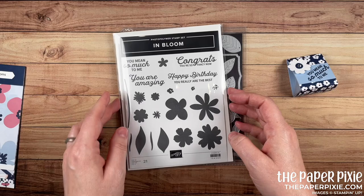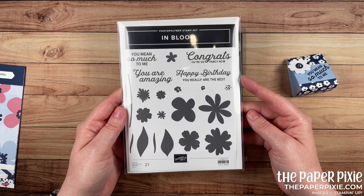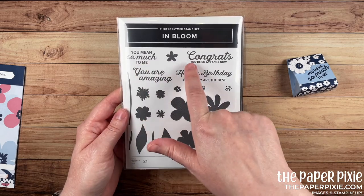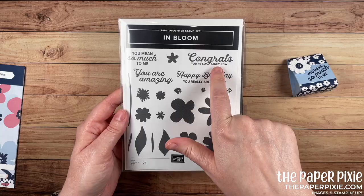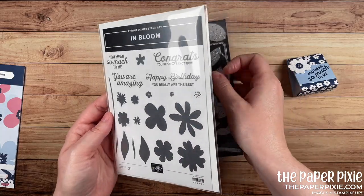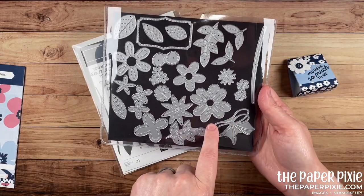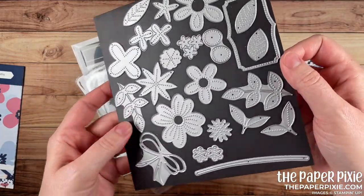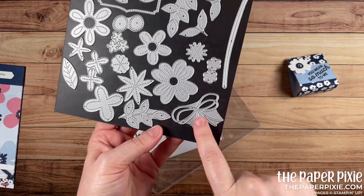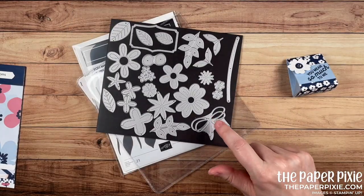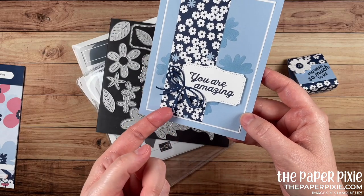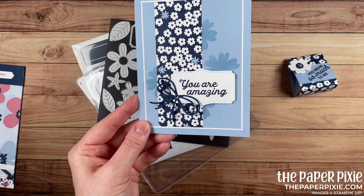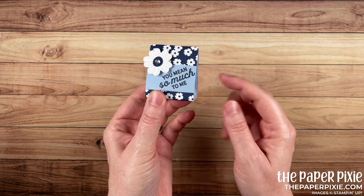And the In Bloom bundle. I love this bundle. This is one of my favorites in the current mini catalog. Love all of the sentiments. You mean so much to me. Congrats. You're so fancy now. That might be my favorite sentiment. And then the set of dies that go with it. These are the Pierced Blooms dies. And I don't know if you can tell, but each of these dies have stitching to them. So they are really great. And this bow, which is probably one of my favorite dies in the whole set, creates these beautiful paper bows here. They almost look like a twine bow, but made out of paper. Perfect for those who are bow challenged. So let me show you how easy this is to make.